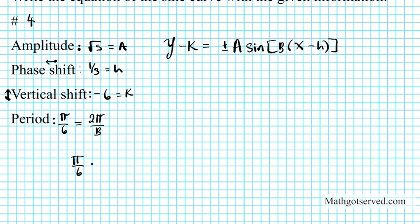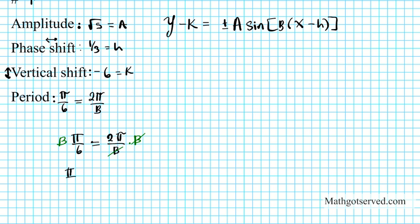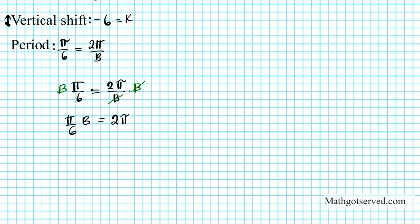So π over 6 equals 2π over b. Let's multiply both sides by b — on the right side the b's divide out, giving π over 6 times b equals 2π. Now to isolate b, multiply both sides by 6 over π. The 6 divides out and the π divides out on the left. On the right we have b equals 12π over π. Dividing out the π's, b equals 12.